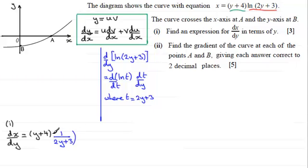Let's put that in brackets. And now we multiply this by dt dy. t was equal to 2y plus 3. So if we differentiate this, we're just going to get 2. So we're multiplying this by 2, okay. So that's the first part of the product rule.